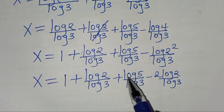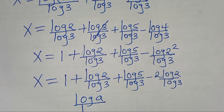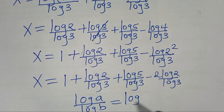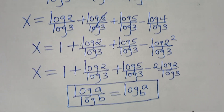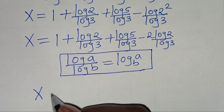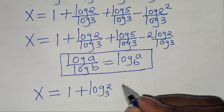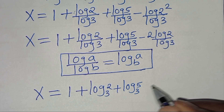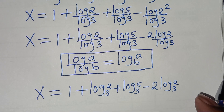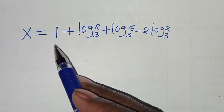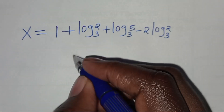Now log 2 over log 3, log 5 over log 3, and log 2 over log 3 are each in the form of log A over log B, which we can express as log A to base B. Applying this change of base property, x is equal to 1 plus log₃2, then plus log₃5, then subtract 2 log₃2.